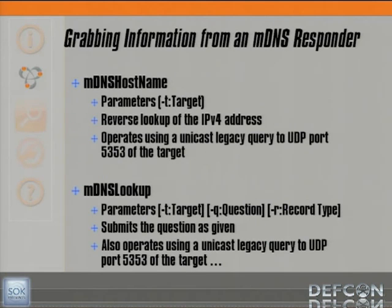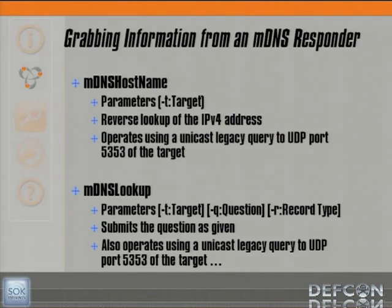When I saw this, I was pretty excited — I had an additional way to quickly profile hosts like I was able to do with Windows hosts. So I created a tool called MDNS hostname. It does a reverse lookup of the IPv4 address. I repurposed some code designed for traditional DNS, so it basically packages the same message but sends it to UDP port 5353. It operates using a unicast legacy query to UDP port 5353 of the target. While looking through the records being advertised over multicast, I saw a lot of information — the types of records — and began to identify unique things about these responding hosts.